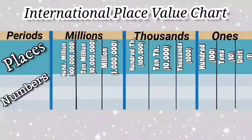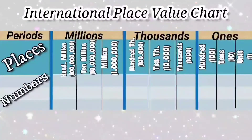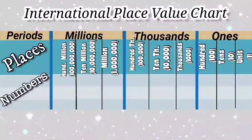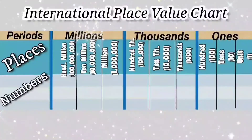The rightmost period is the ones period, then comes the thousands period, and the leftmost period is the millions period.